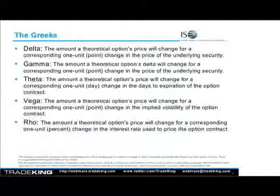Here's a quick recap of what the Greeks are. Delta is how much your option should move for a one-point movement in the underlying stock — all of these are in a theoretical world. Gamma is so important to delta that it actually got its own Greek: it's the rate of change of delta. Every time the stock moves a dollar, delta is a dynamic number and will move with it. Gamma is how we track that.